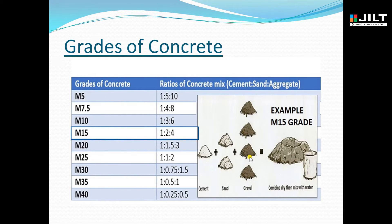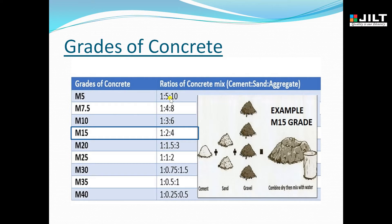Now let us look at the very important chart — the Grades of Concrete. I have listed grades from M5 to M40. M indicates mix, and the number indicates the characteristic compressive strength in N per mm². The ratio for M5 is 1:5:10, where 1 indicates cement, 5 indicates fine aggregate (sand), and 10 indicates coarse aggregate (gravel).